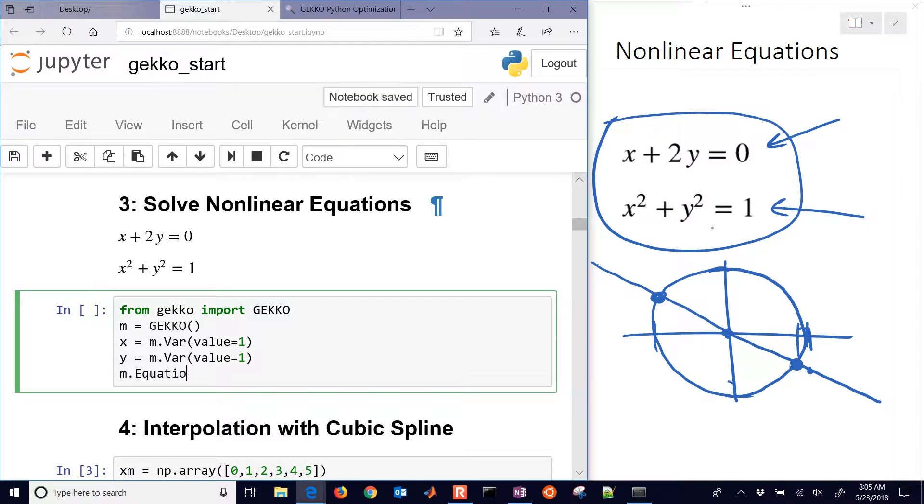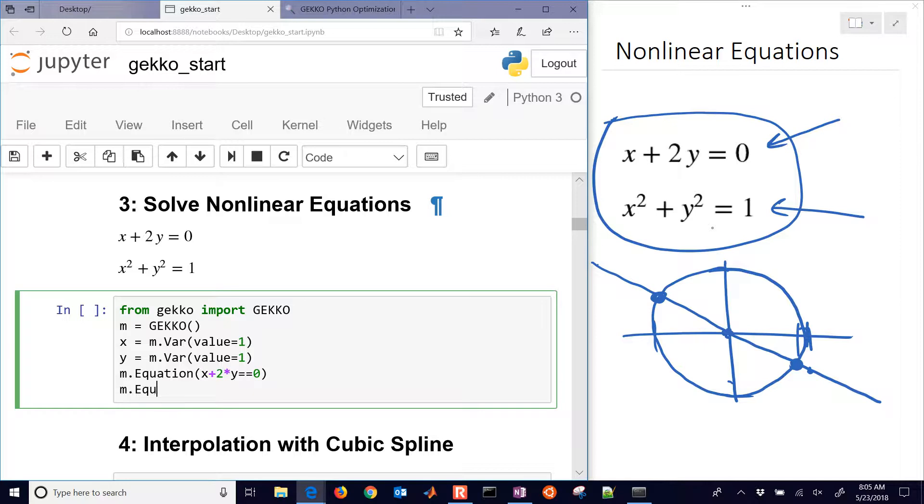Okay, and then put our different equations in here, x plus two times y. Don't forget the double equal there. And then another equation as well, x squared plus y squared equals one.